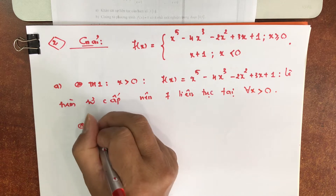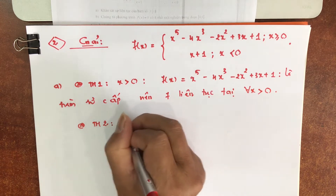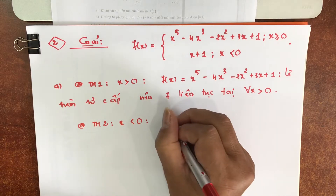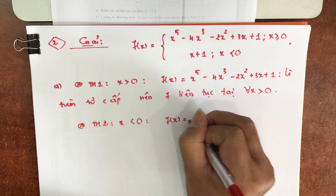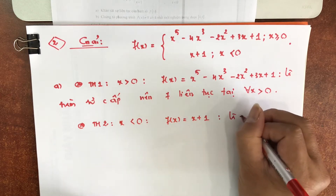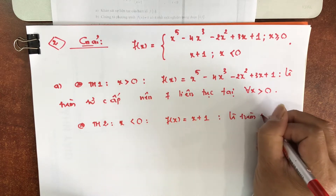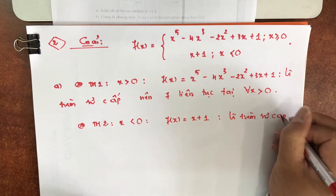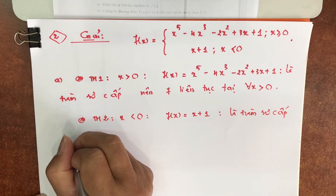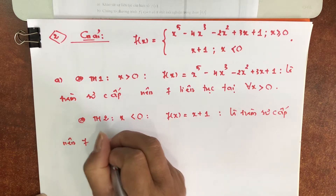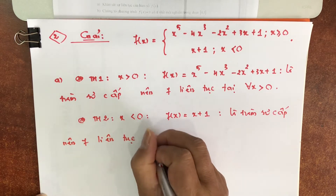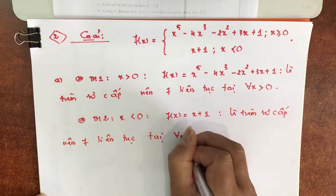Trường hợp 2: x nhỏ hơn 0. F(x) bằng x cộng 1, cũng vậy là hàm sơ cấp. Nên hàm F liên tục tại mọi x nhỏ hơn 0.